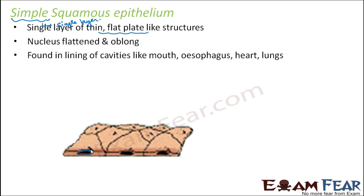Where do we find them? They are found in the lining of cavities like the mouth cavity, esophagus, heart, and lungs. So it just acts as a lining. Now the question is, why are thin flat epithelial cells found in such locations? Why is this type of epithelium present in the lining of such cavities?